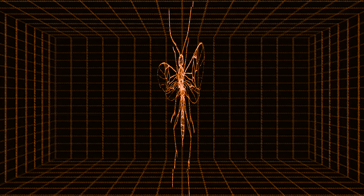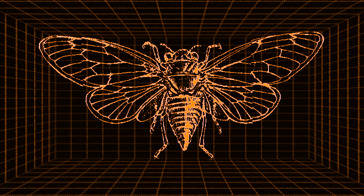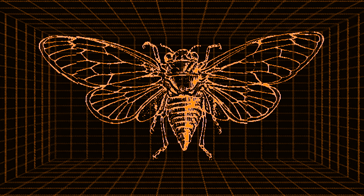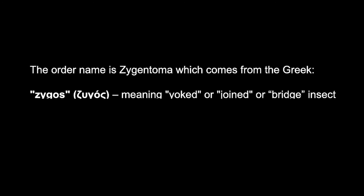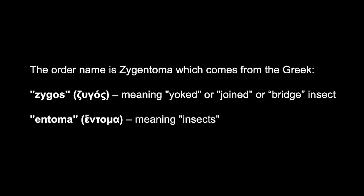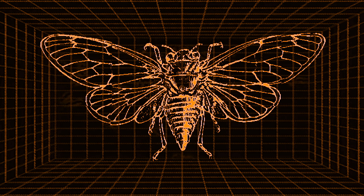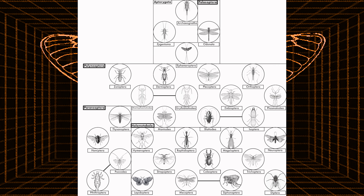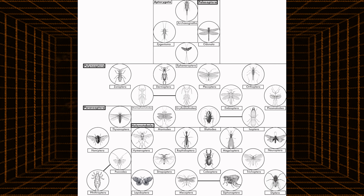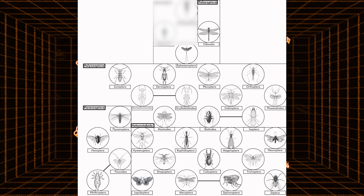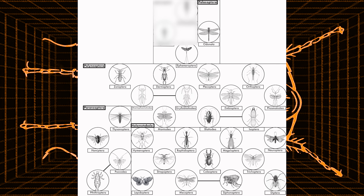Also, because I missed it in the last video, the order name for silverfish is Zygentoma, which comes from the Greek 'Zygos', meaning yoked, joined, or bridge, and 'entoma', meaning insects. They are called bridged insects because they were thought to be the missing link between winged and non-winged insects, which has since been found not to be the case.